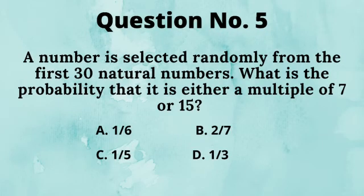Q5. A number is selected randomly from the first 30 natural numbers. What is the probability that it is either a multiple of 7 or 15? Answer is 1/5.